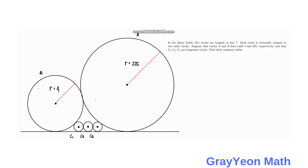Welcome to Grail Math. In this problem, we are asked to solve for C1, C2, and C3. In the figure below, five circles are tangent to the line L. Each circle is externally tangent to two other circles. Suppose that circles A and B have radii 4 and 225, respectively, and that C1, C2, C3 are congruent circles. Find their common radius.